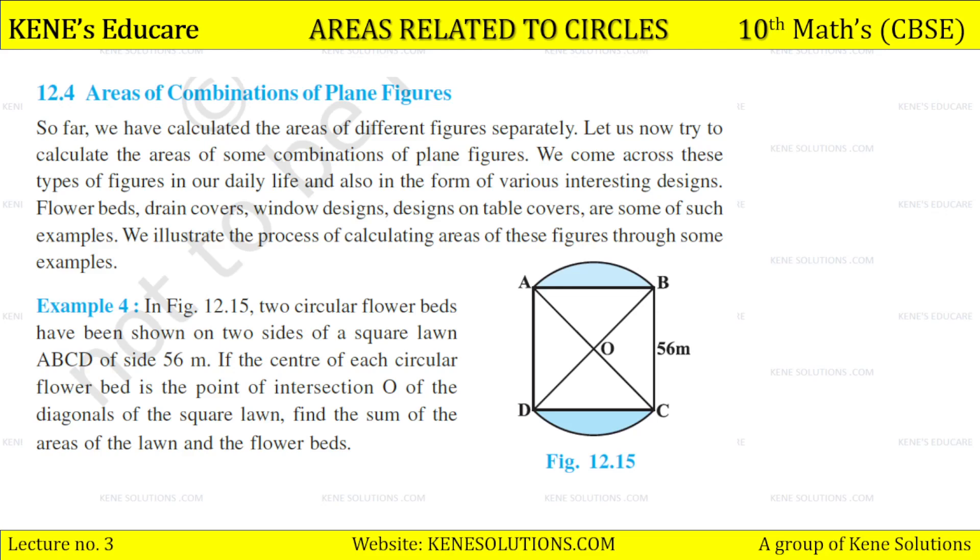So, example number 4 here. Two circular flower beds have been shown on two sides of a square lawn ABCD of side 56 meters. If the center of each circular flower bed is the point of intersection O, see here is intersection O.